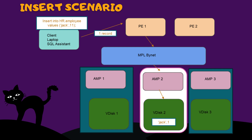I want to insert a new employee with the name Jack and his employee ID as 11. I have used an INSERT query to perform this task using the SQL Assistant tool. Once this query is executed in the tool, you can see the records being passed through the Parsing Engine, where the Parser first checks the INSERT query syntax and understands it.